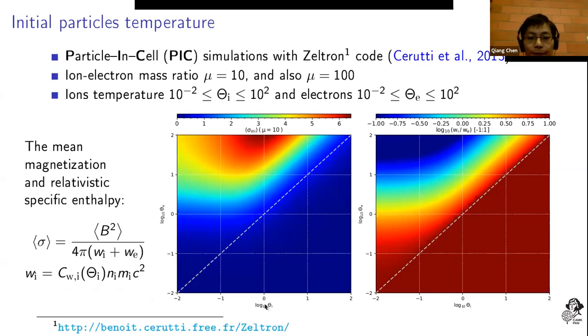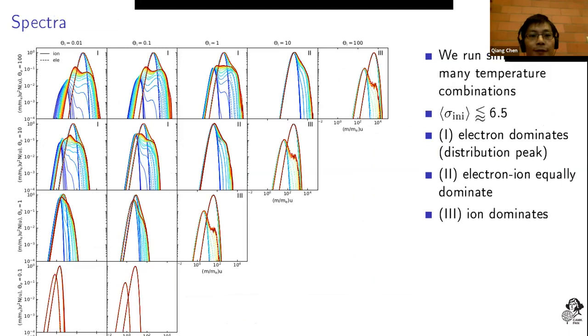For the ions in the horizontal and the electron temperatures in the vertical, we did the simulations on the grid and we presented the spectra in this figure.